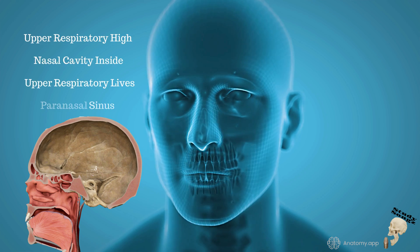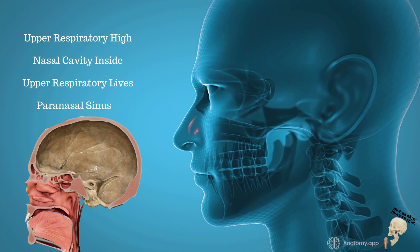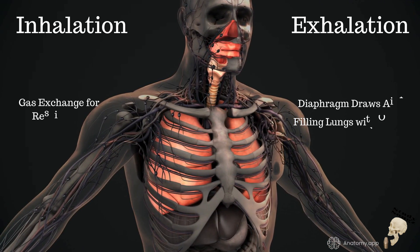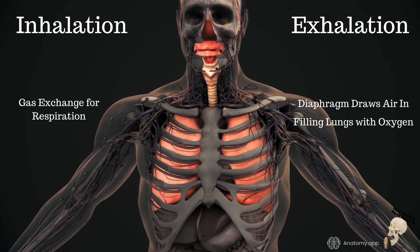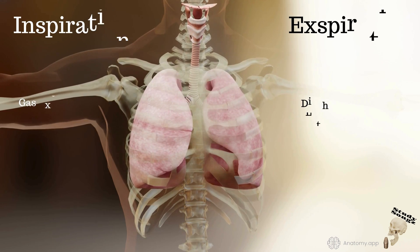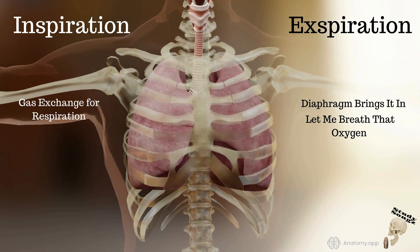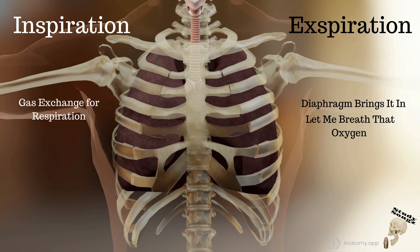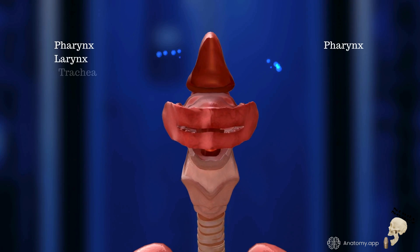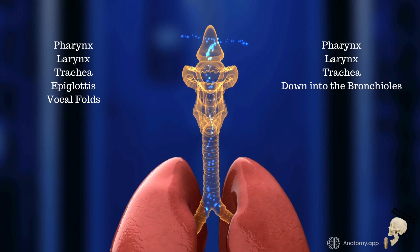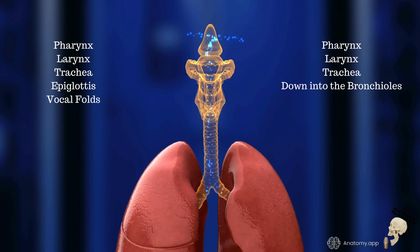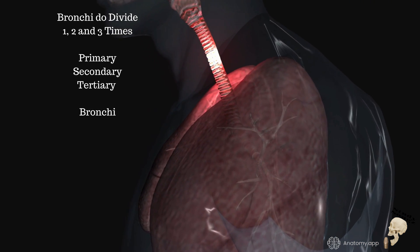Upper respiratory: nasal cavity inside, upper respiratory limbs, paranasal sinuses. Inhalation, exhalation, gas exchange for respiration. Diaphragm draws air in, filling lungs with oxygen. Inspiration, expiration. Pharynx, larynx, trachea, epiglottis, vocal folds — pharynx, larynx, trachea, down into the bronchioles.